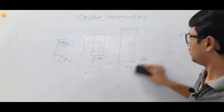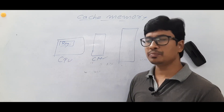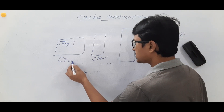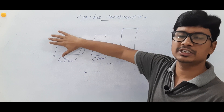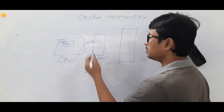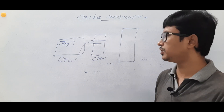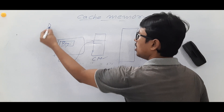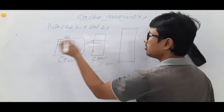Now let's discuss the working process. When a CPU wants to fetch an instruction, it will first search in the cache memory. If the element the CPU is searching for is available in the cache memory, we call it a cache hit, or simply a hit, and the CPU will fetch and execute that instruction.